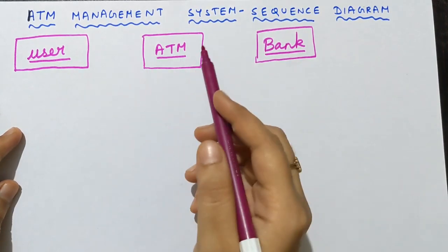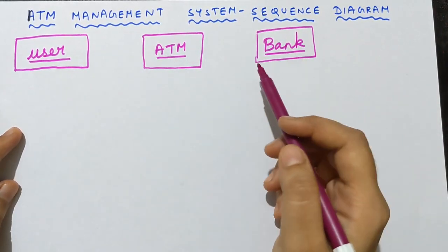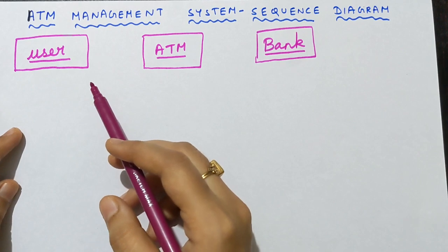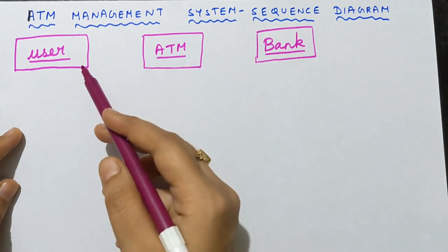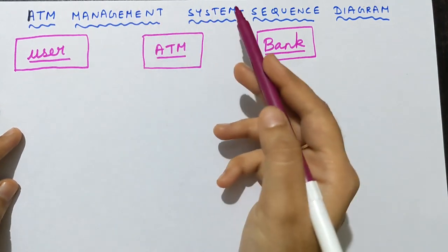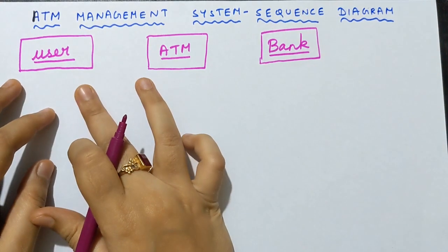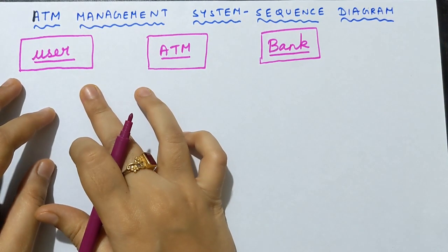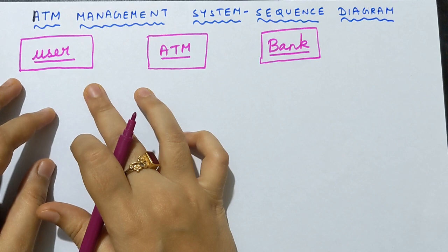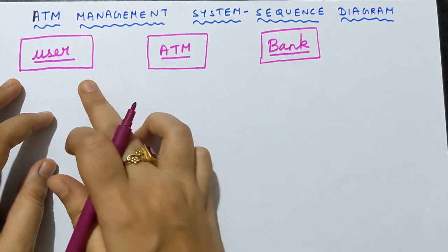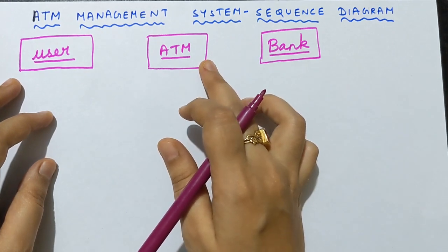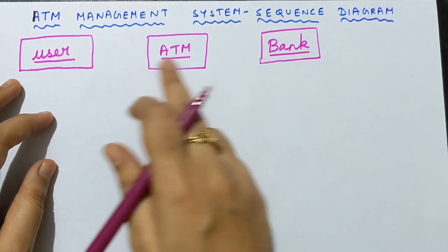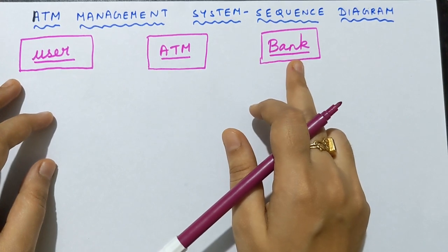You are supposed to write the multiple objects inside the rectangular box and underline them. The multiple objects here are user, ATM, and bank, because all three are very important for the ATM management system. User is important because users are the customers; customers have accounts in the bank, and only when they have an account can they go to an ATM and withdraw or deposit money. So these three are the multiple objects — this is your first step.